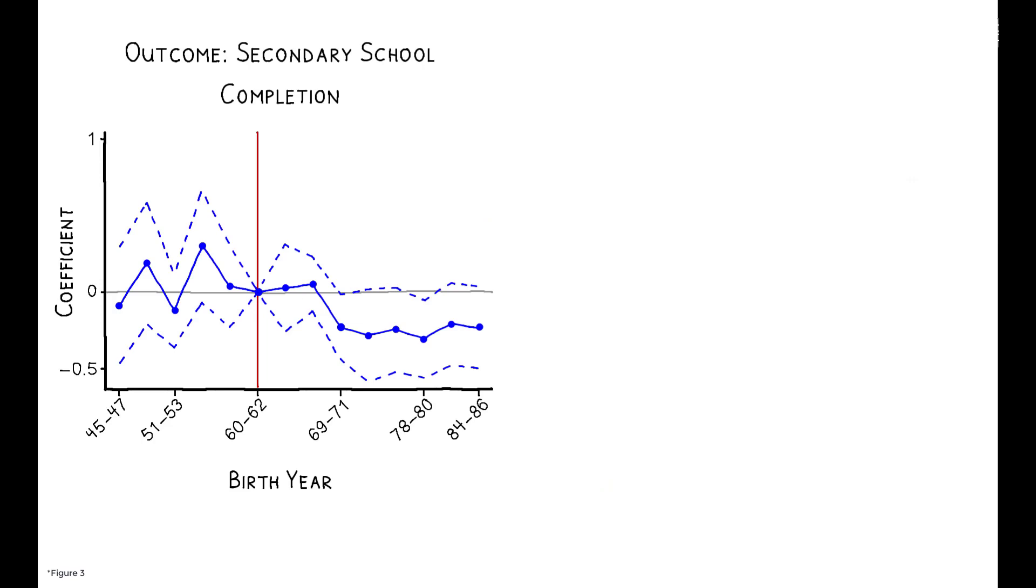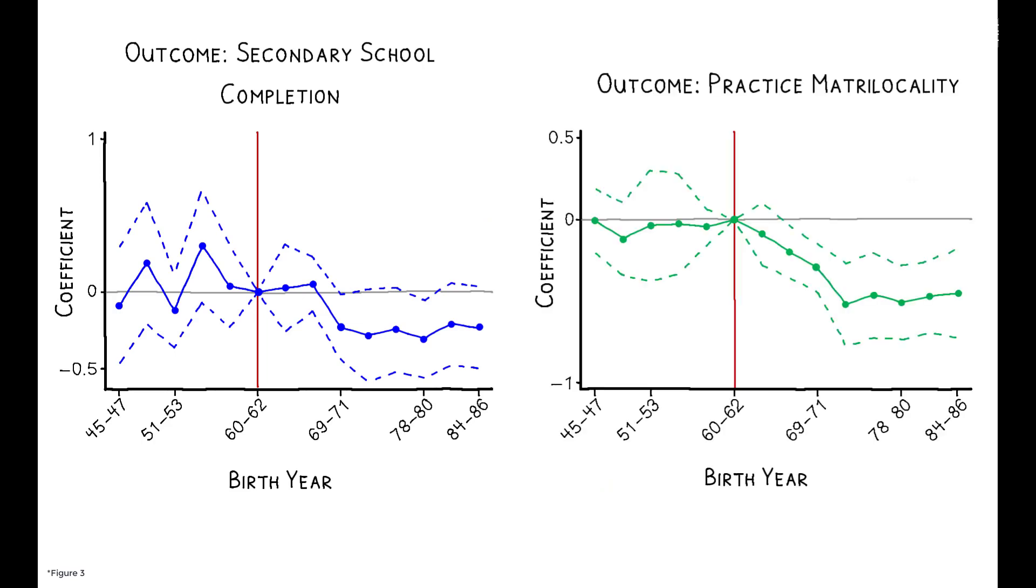These figures show the differential effects on matrilocal females of being born in a province with high exposure to the pension plan. Each point corresponds to a particular three-year birth cohort. So, for example, these are the differential effects of the pension plan when estimated among women born between 1969 and 1971. These women were between the ages of 6 and 8 when the plan was introduced.